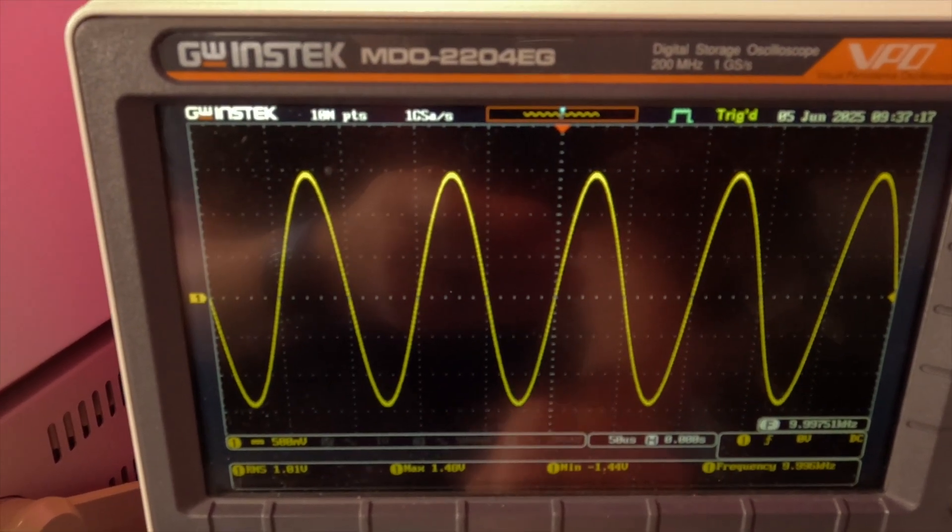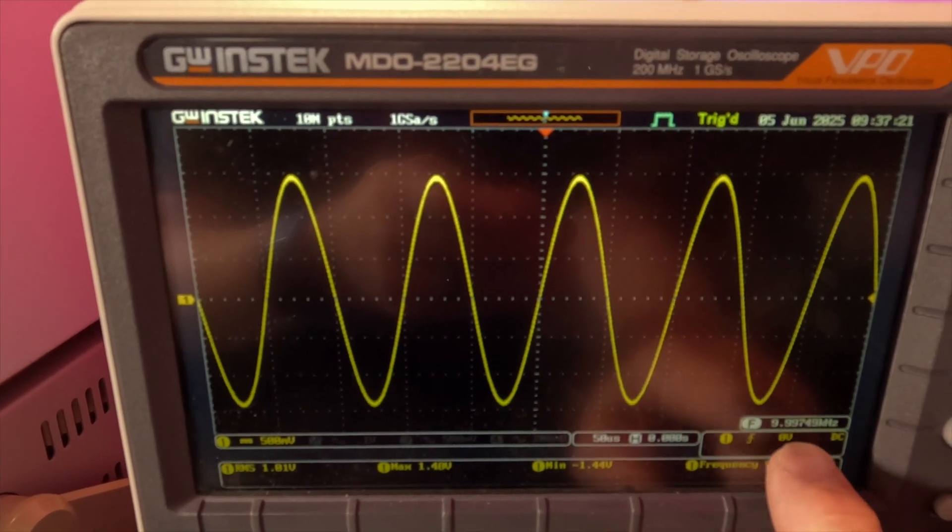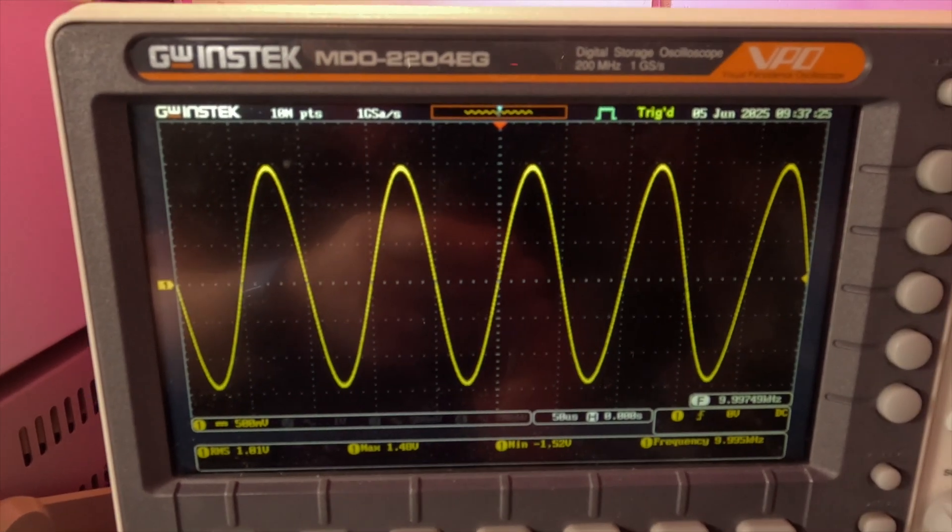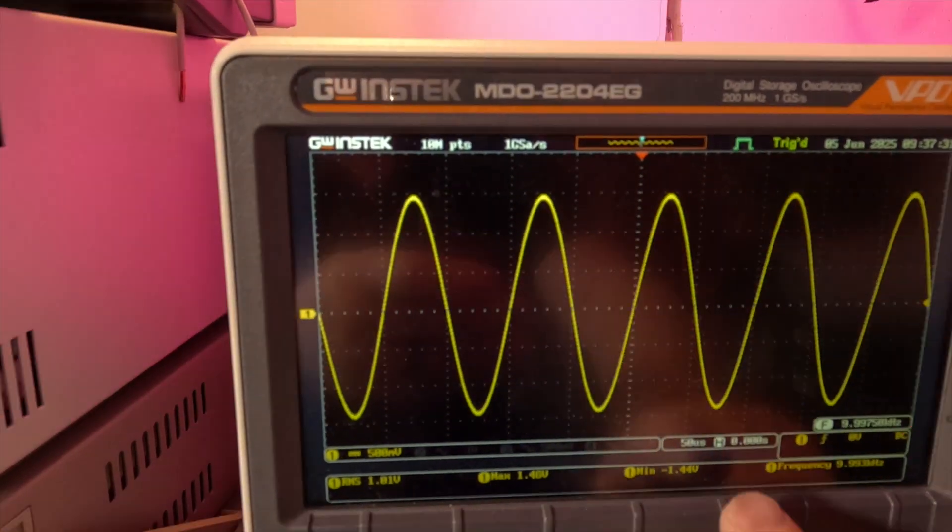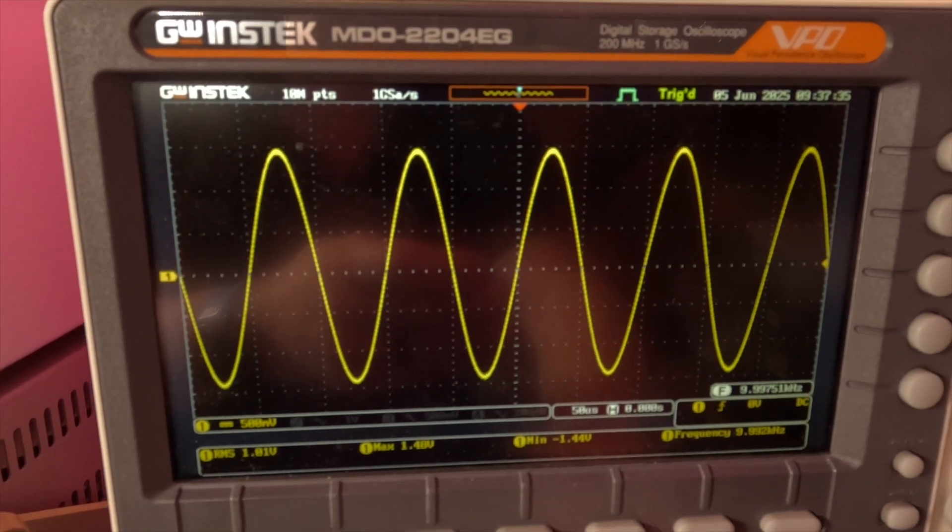It's got the max and min on, the frequency is 10k and the counter showing 9.9997 or something like that. So it's very close to the other ones, and again 50 microseconds per division.